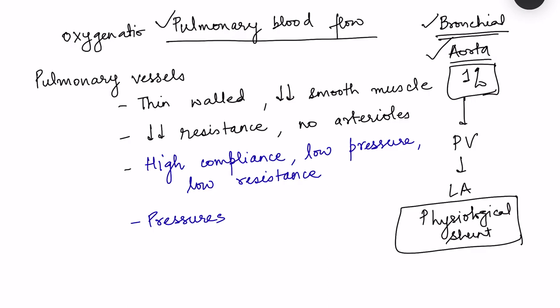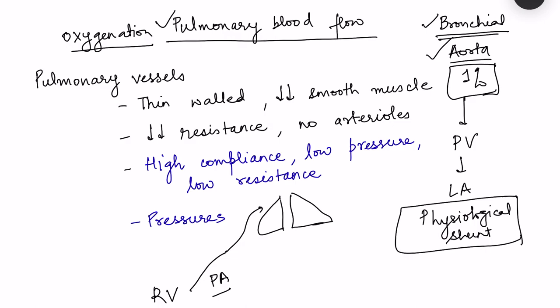Pulmonary blood flow arises from the right ventricle via the pulmonary artery, which enters the lungs and breaks down into capillaries. After oxygenation, blood continues as venules which combine to form the pulmonary vein entering the left atrium. The characteristics of pulmonary circulation are very different from systemic circulation because it is suited for oxygenation.